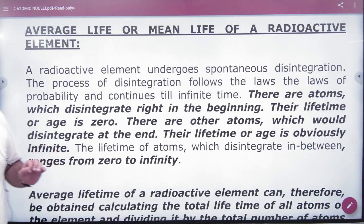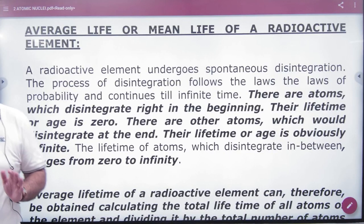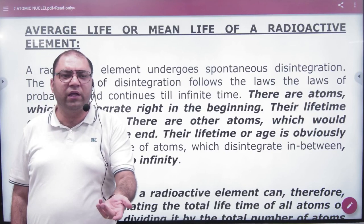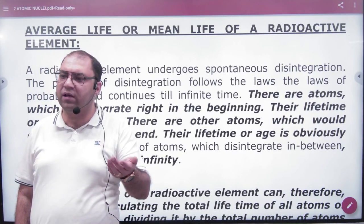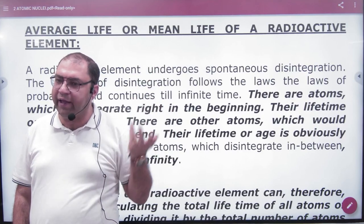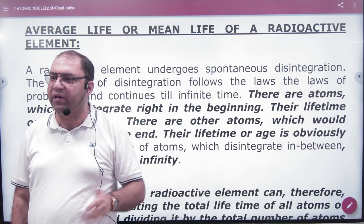The average life or the mean life of radioactive elements is like a human. How many years of human life is a human life? Average life is about 60-60 years. It's simple.